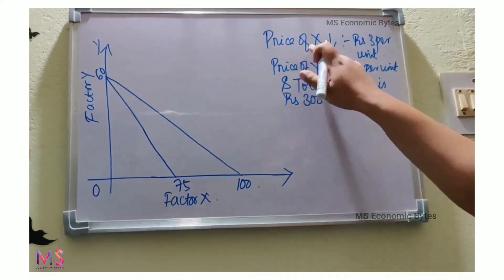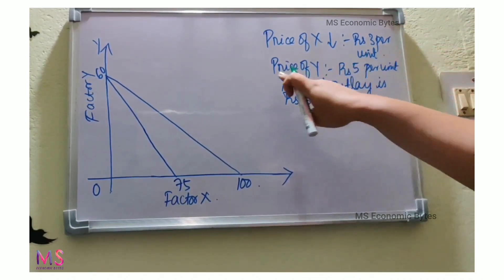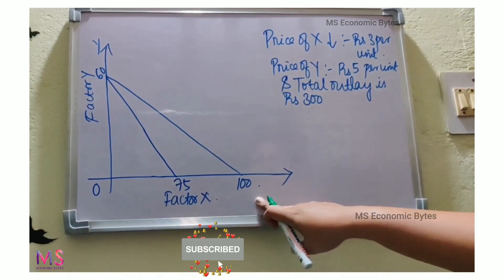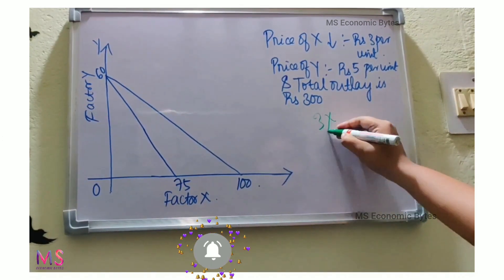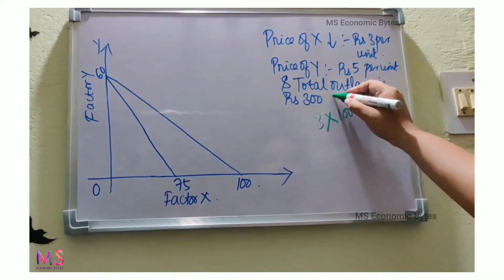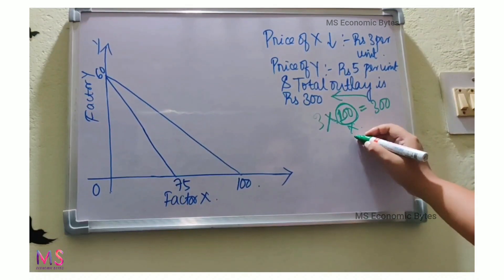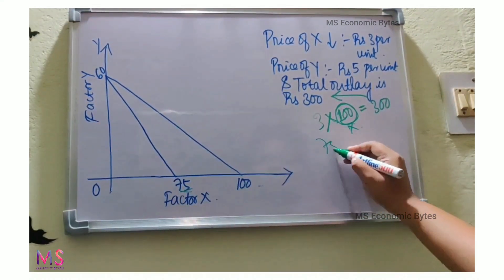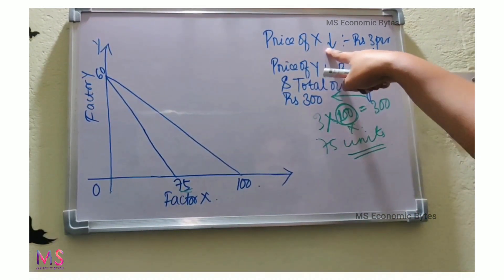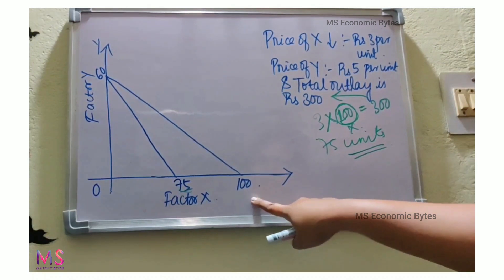Now suppose the price of X has reduced to ₹3 per unit, which was earlier ₹4 per unit, with the price of Y and total outlay remaining the same. If the producer buys only X, it can now buy 100 units because 3 × 100 = ₹300. Earlier it was buying 75 units of X, so with the decrease in price of X, the consumer can now purchase more — 100 units of Factor X.